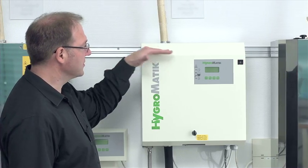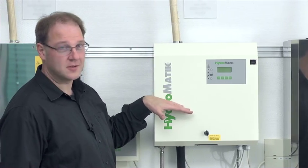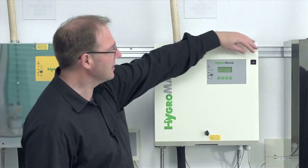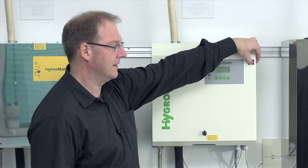Before I begin with the actual maintenance I need to make sure that the water is drained from the steam cylinder. To do that I press the control switch in position 2 and hold it.